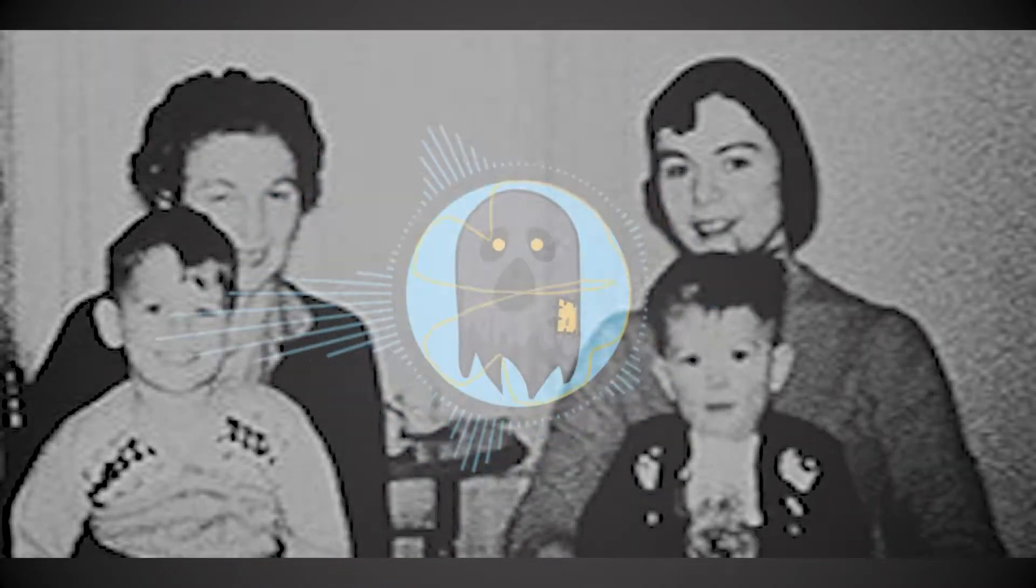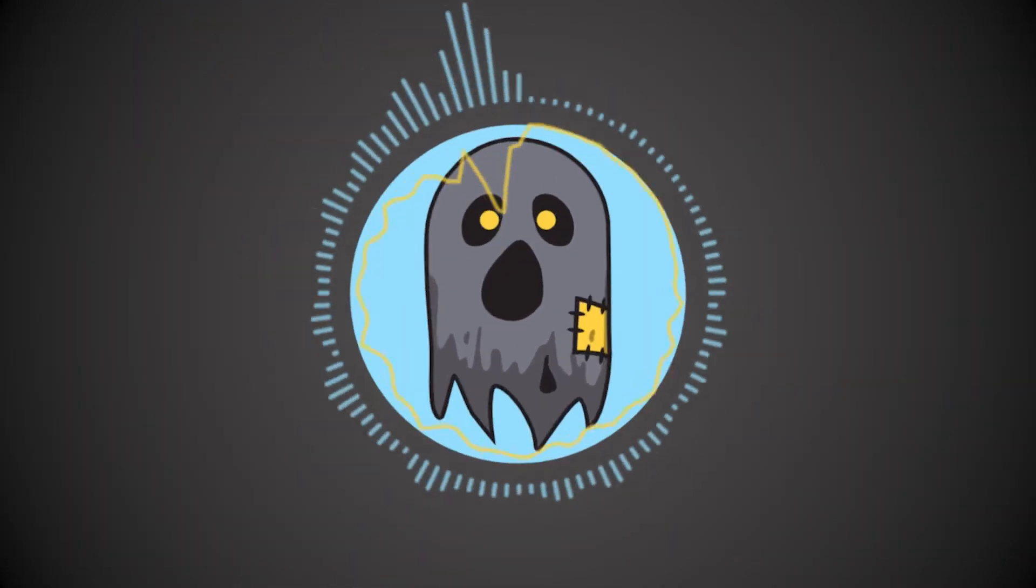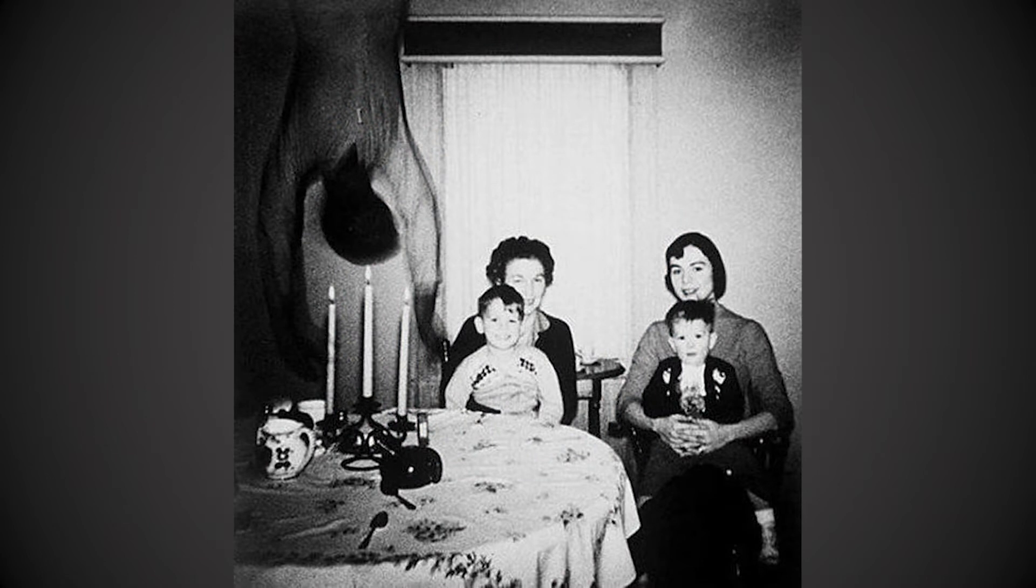But unknowingly to the father, he would capture an unwanted guest in the photo. As you can see here, the figure is of someone or something hanging upside down or falling next to the grandmother. This would be enough for anyone to move out or go running screaming from the house. Unfortunately, little is known of what happened to the Cooper family.